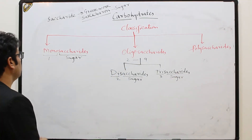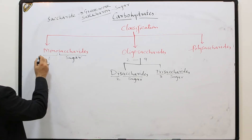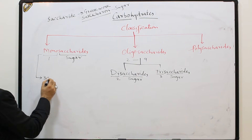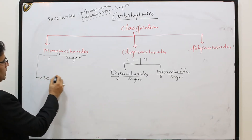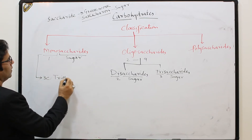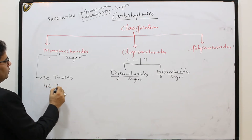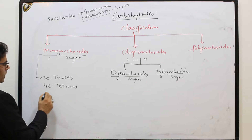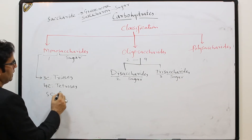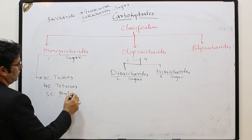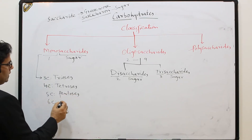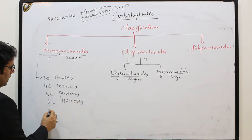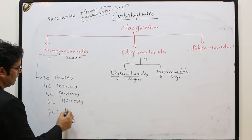Monosaccharides have further types based on the number of carbons. If we have three carbons in the sugar, we call them trioses. If we have four carbons, we call them tetroses. If we have five carbons, we call them pentoses. If we have six carbons, we call them hexoses. If we have seven carbons, we call them heptoses.